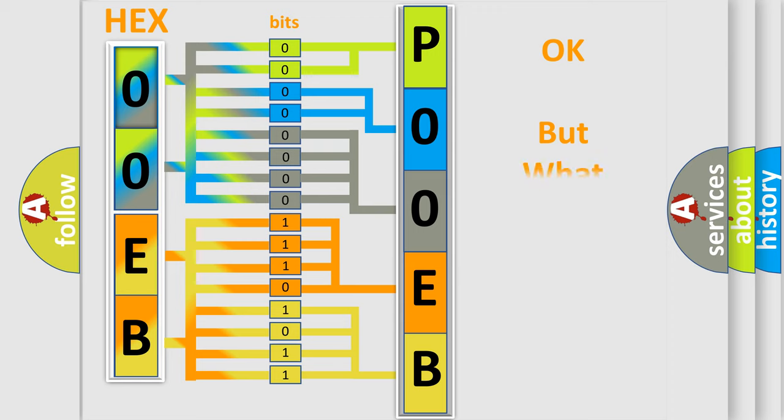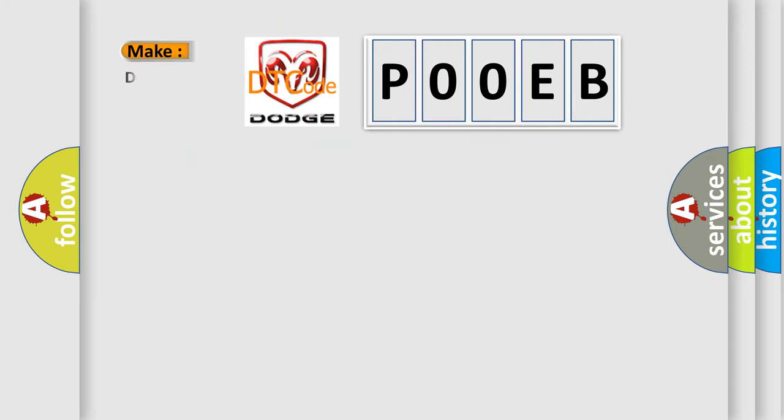The number itself does not make sense to us if we cannot assign information about what it actually expresses. So, what does the Diagnostic Trouble Code P00EB interpret specifically?